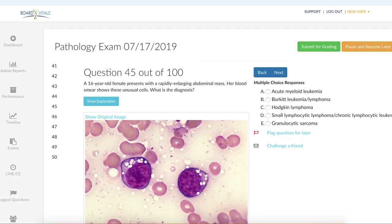The question reads: a 16-year-old female presents with a rapidly enlarging abdominal mass. Her blood smear shows these unusual cells which you see in the question here, and it asks what is the diagnosis.